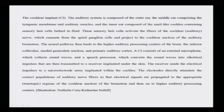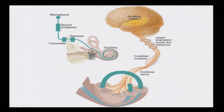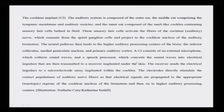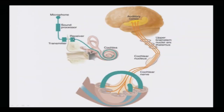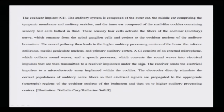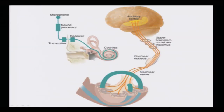The cochlear implant (CI) consists of an external microphone that collects sound waves, a speech processor that converts sound waves into electrical impulses, and a transmitter that sends these to a receiver implanted under the skin. The receiver sends the electrical impulse to a micro-electrode array (MEA) implanted within the cochlea. This is where MEAs find their application — understanding cell-electrode interfacing is a very important criterion for the success of these implants.